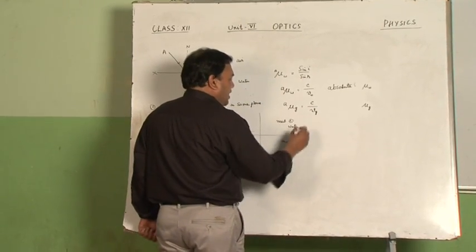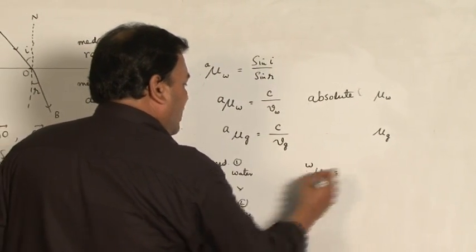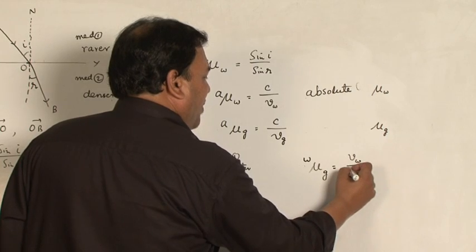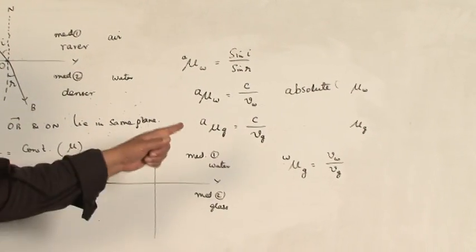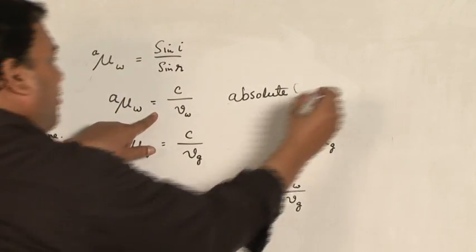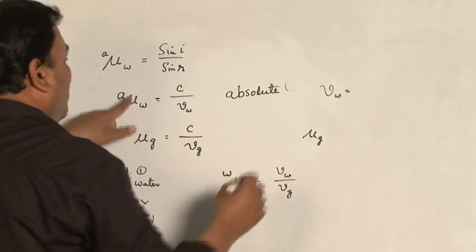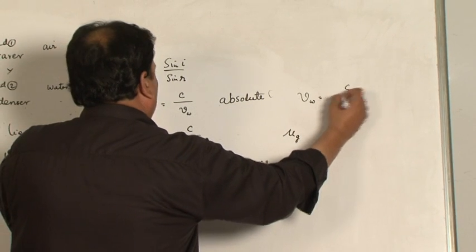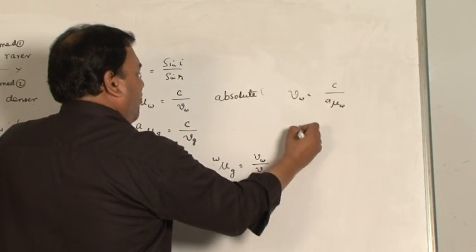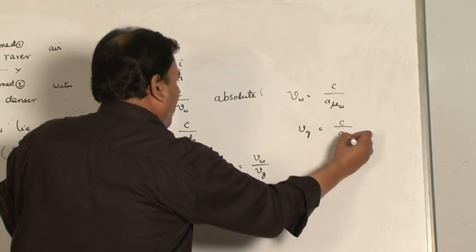In such cases, we can use these equations. The refractive index of glass with respect to water can be written as the ratio of velocity of light in water divided by velocity of light in glass. We can substitute the values of V_w and V_g from these equations. From the equation, V_w equals C upon A mu_w. Similarly, V_g can be written as C upon A mu_g.